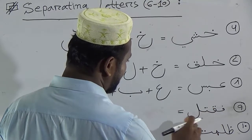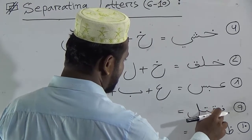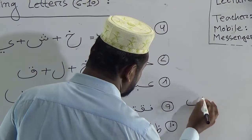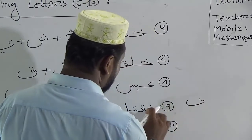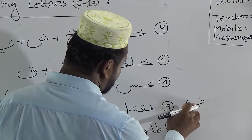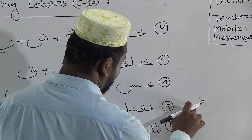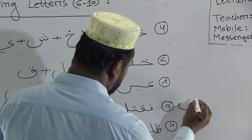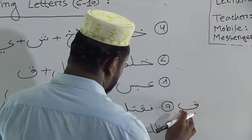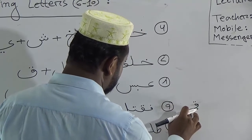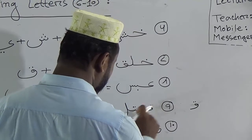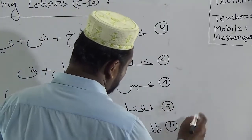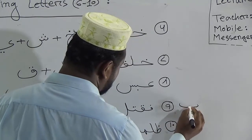There are four letters in this word. The first letter is 'fa' — because the full fa is like this, but when it comes together with other letters it will be shaped like this, only the head. So this is fa. The second letter is 'kof' — the full kof shape is like this, but when it comes with other letters its shape will be like this. This is kof. The third letter is 'thaa' — the full thaa is like this, but when it comes together with other letters it will be shaped like this.